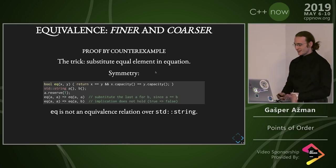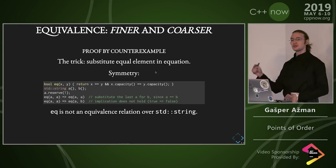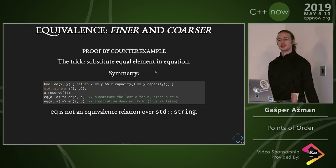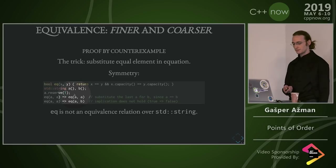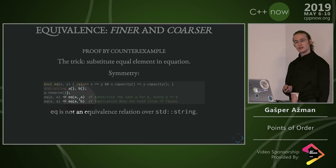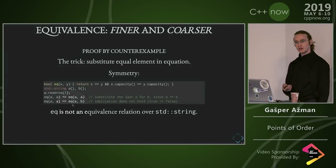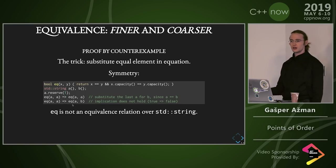The trick is: we get to substitute equal elements in any equation. And so we can say — let's check if it's symmetric over std::string. This is our equivalence that we're trying to check. We've got two strings A and B, and we say A.reserve(1), which makes capacity different. Then from EQAA, EQAA follows — this is true. But we get to substitute the last B because they're equal. And this is no longer true. So we found a counterexample: this is in fact not an equivalence over std::string.